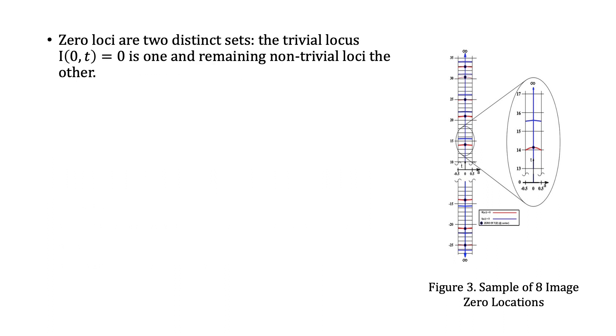Zero loci are two distinct sets: the trivial locus (0,t) and t = 0 is one, and all the remaining non-trivial loci, the other.